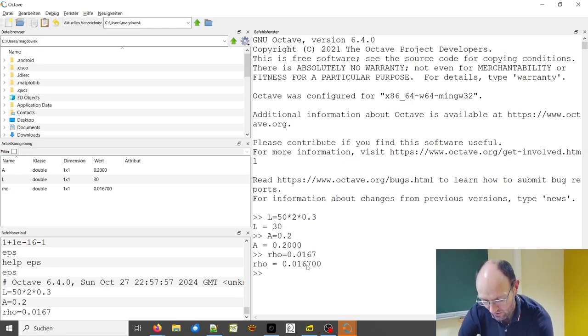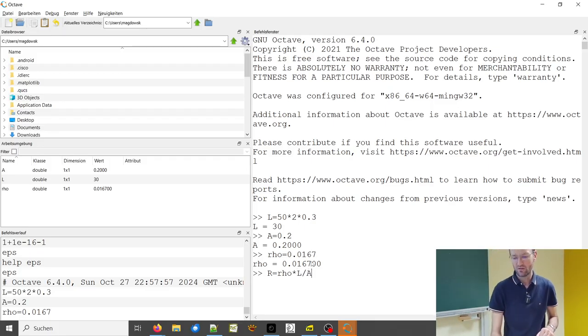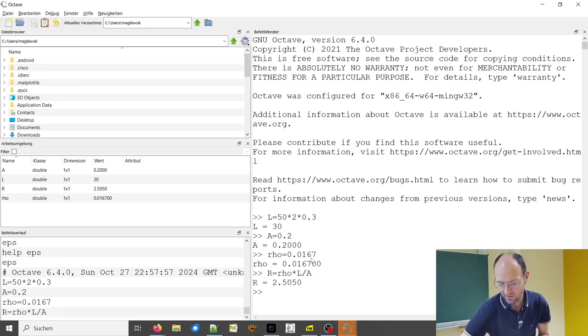And so now if we say R is rho times the length divided by the area, and we have area in millimeter squared, but the rho is also given with millimeter square, then we end up with something like 2.5 ohm. Which could be that this cable has 2.5 ohm of resistance.